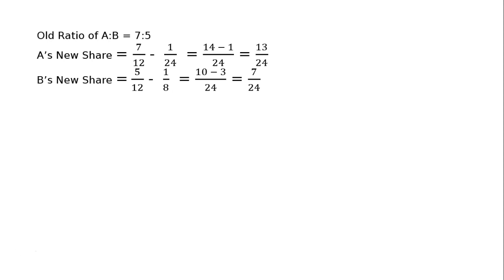Now C: C jo 1/6th ke liye admission le raha hai. How did we get 1/6? 1/24th came from A and 1/8th from B. 1/24th from A and 1/8th from B. LCM 24, numerator mein 3, so 1 plus 3 is 4 upon 24.